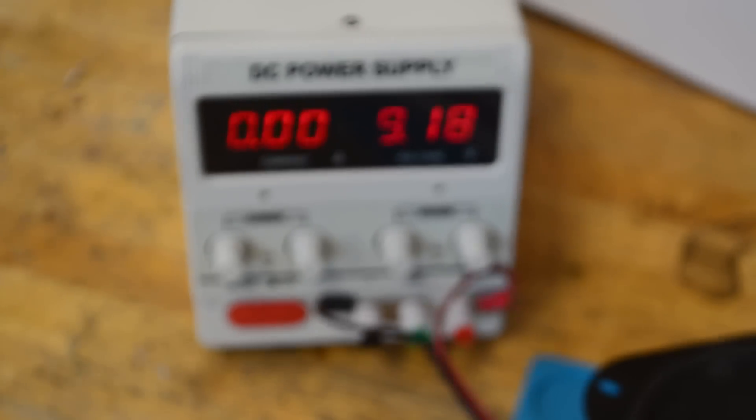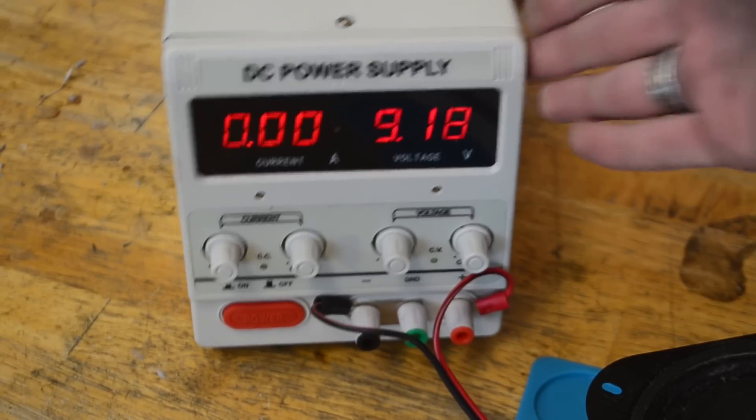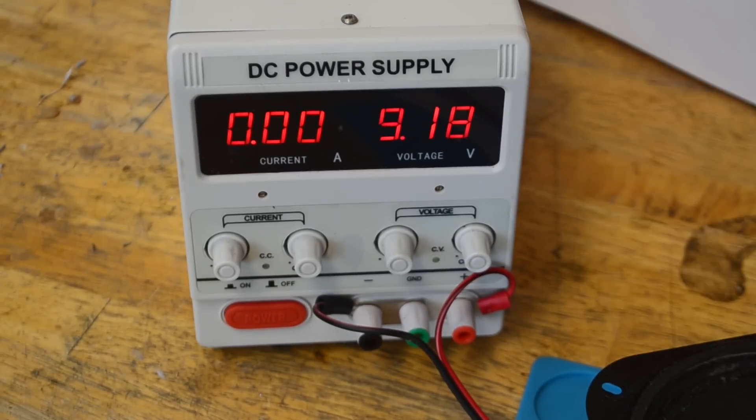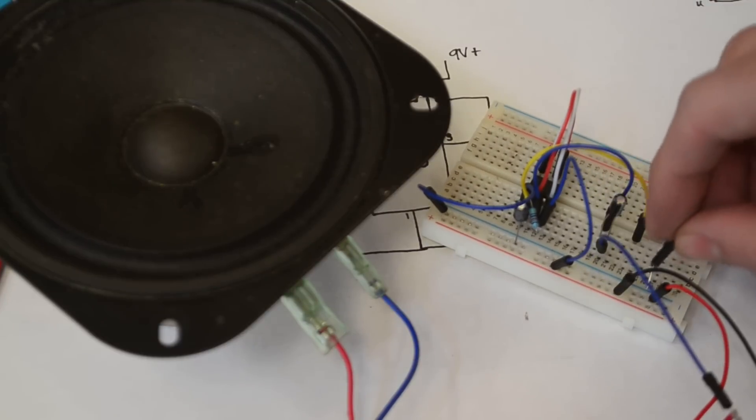And so to power it I'm going to be using this DC power supply that I have set to 9 volts. If you don't have a power supply like this you can easily just use a 9 volt battery as well. And so from the power supply I'm going to connect up the positive to the positive rail and the negative to the negative rail.